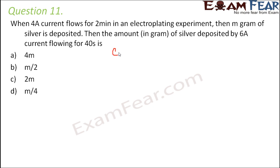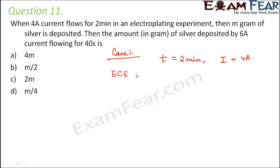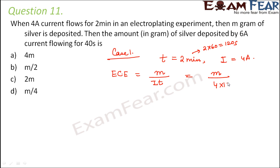We have two scenarios. In case 1, the time for which the current flows is 2 minutes, and the current is 4 amperes. We know that the electrochemical equivalent of any substance is equal to the mass deposited per unit charge flowing, that is m divided by it. Here m is the deposited mass. So m divided by i is 4, and t is 2 minutes, which converts to 120 seconds. So we have 4 into 120 for case 1.